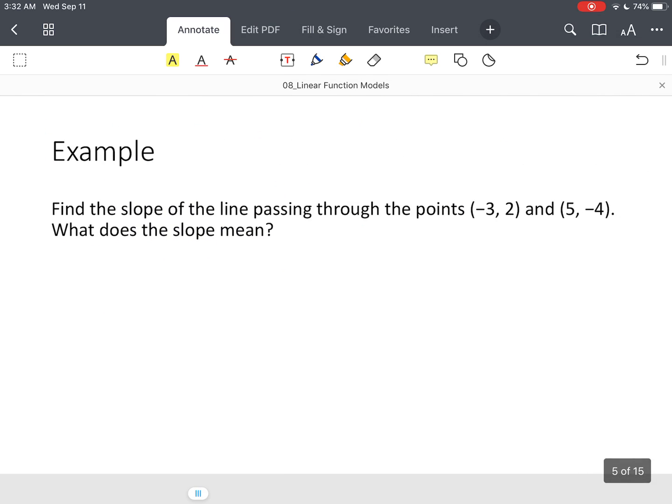Alright, so let's look at this example. We have - we want to find the slope of the line passing through the points negative three, two, and five, negative four. So the first thing you do, they gave me two points on my label.